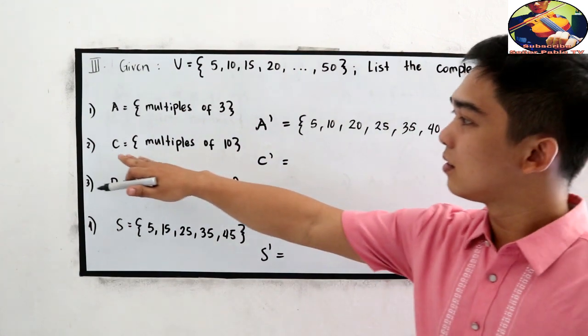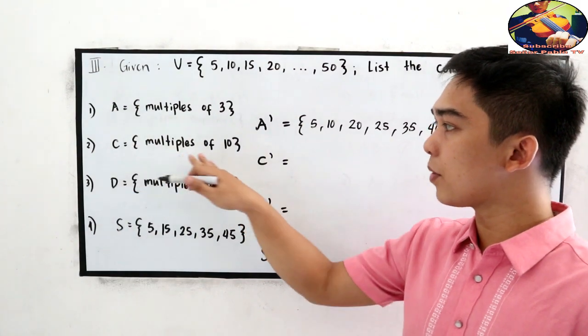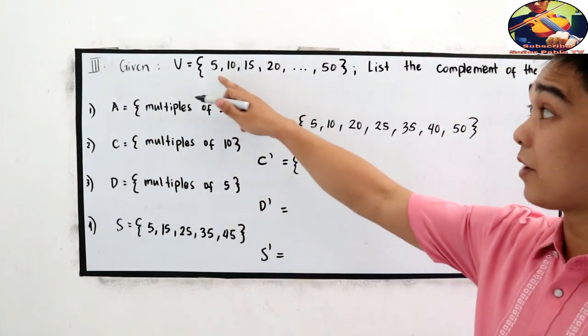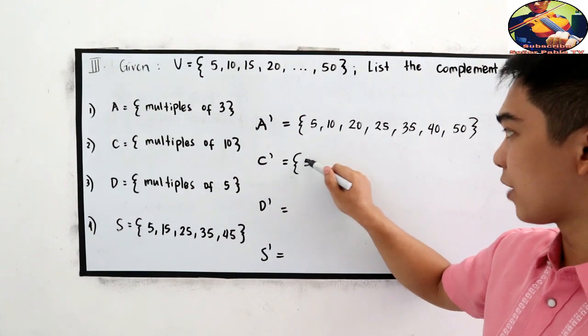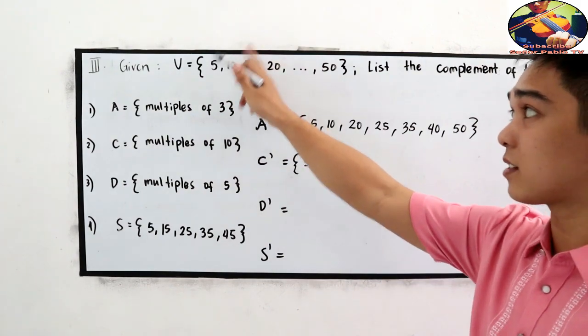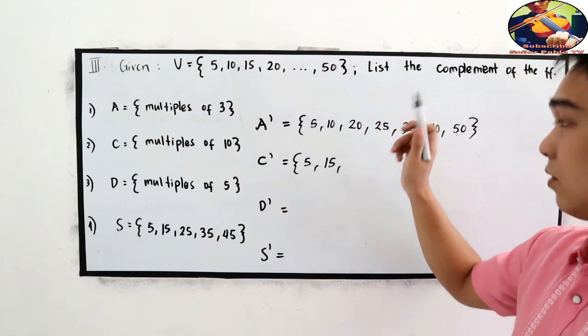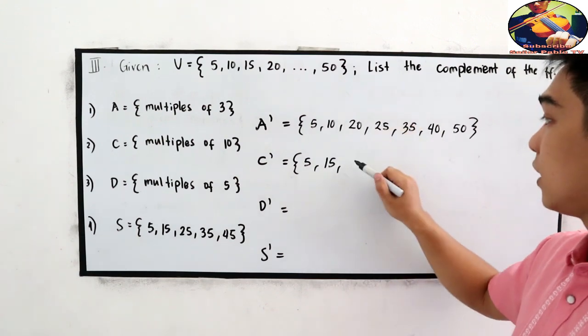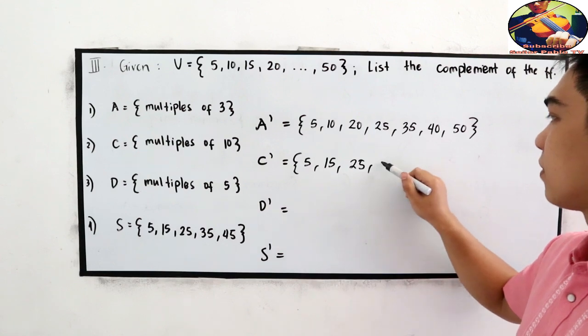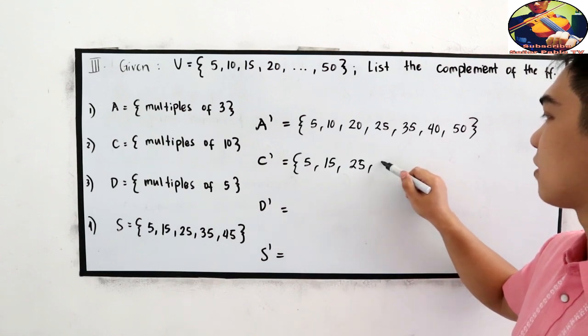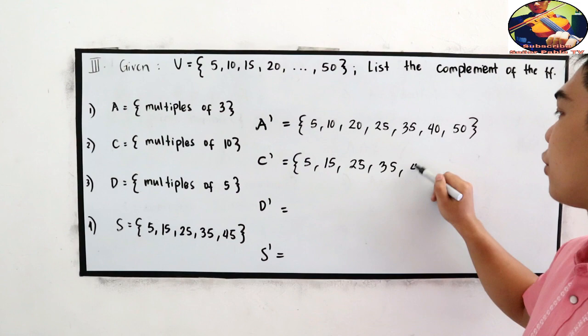Next, set C, multiples of ten. Five is not a multiple of ten. So we can write five. Of course, we will exclude ten. Next, fifteen. We will not include twenty. Twenty-five, next, thirty-five and forty-five.